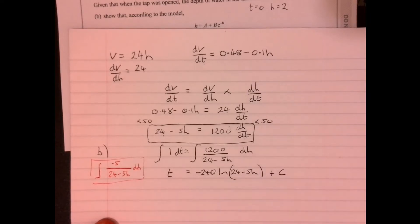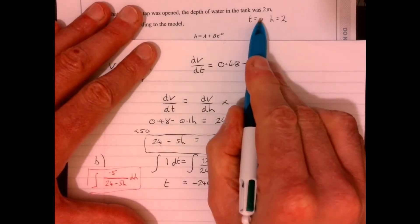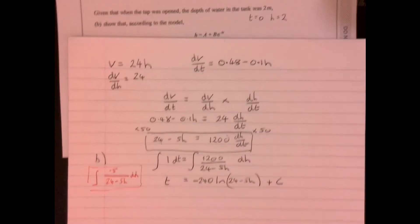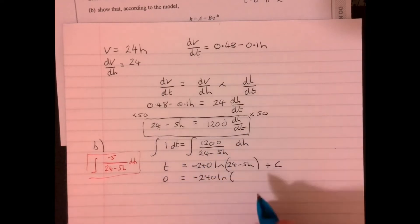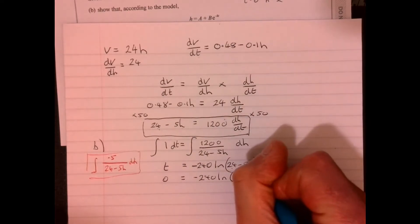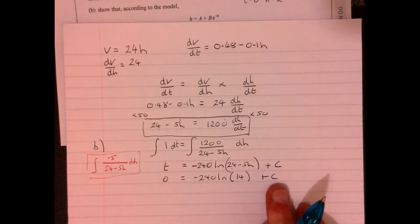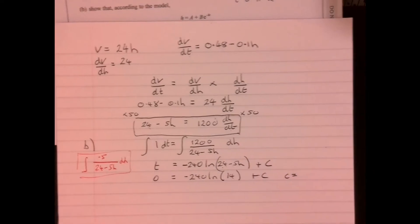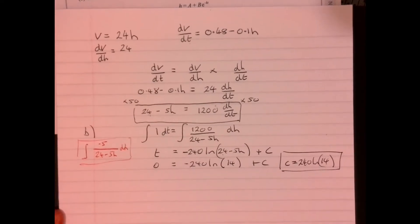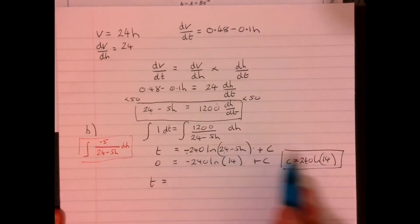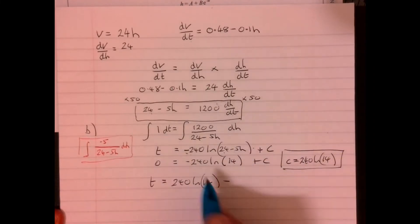Now, we need to work out what this plus c is. Remember that t equals 0, h equals 2. So let's just go and put that information in. So we're going to write 0 equals minus 240 times ln of 14 plus c. So c must be the positive of this. So c equals 240 ln 14. Let's write where we've got to now. So we've got t equals 240 ln 14 take away 240 ln 24 minus 5h.